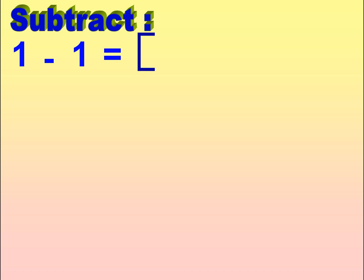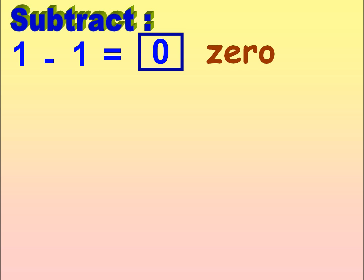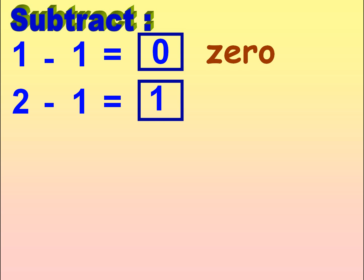1 minus 1 is equal to 0. Z-E-R-O, 0. 2 minus 1 is equal to 1. O-N-E, 1.